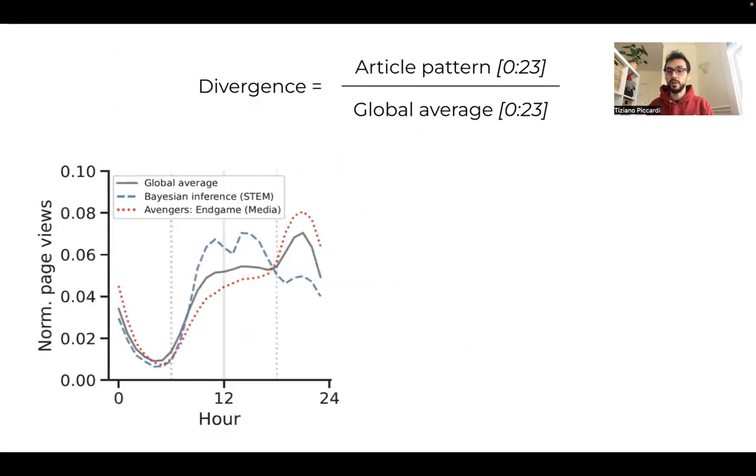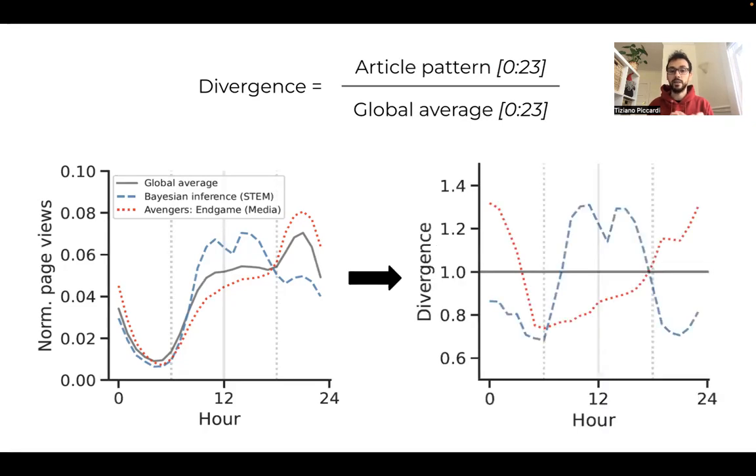To model this behavior and capture these differences, we define the concept of divergence, defined as the ratio between the pattern of each article and the pattern of the global average. An article with a flat line as a divergence pattern means that it follows exactly the global average and doesn't have any specific attention fingerprint. Meanwhile, values greater or smaller than 1 represent more or less attention than average for that specific hour.